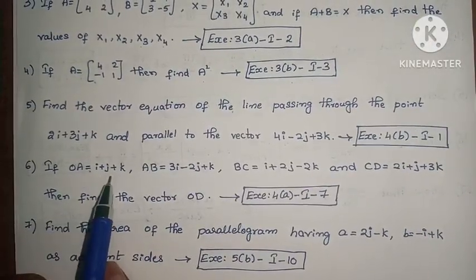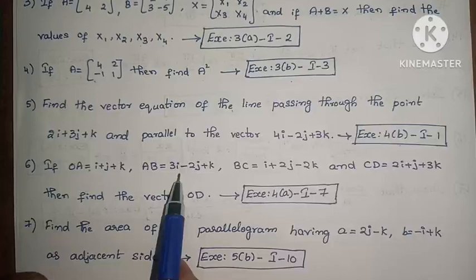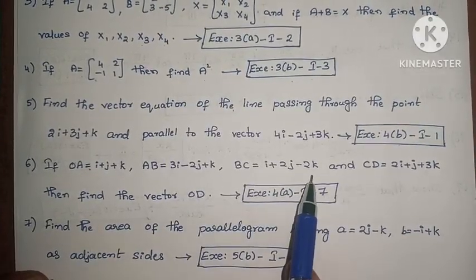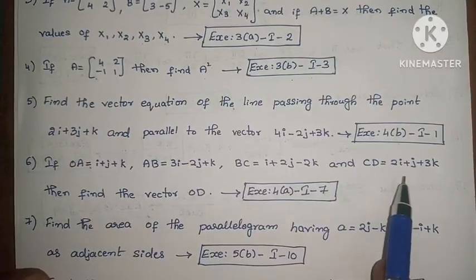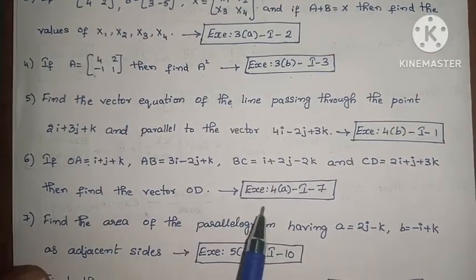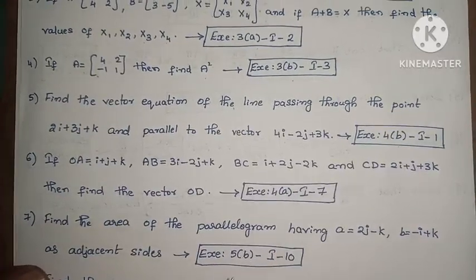Next, if OA equals i plus j plus k, AB equals 3i minus 2j plus k, BC equals i plus 2j minus 2k, and CD equals 2i plus j plus 3k, then find the vector OD. Exercise 4, First Roman, Seventh one.